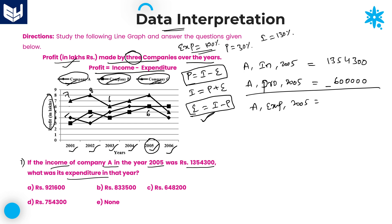Expenditure is equal to income minus profit. Just subtract the profit value from the total income value: 13,54,300 minus 6,00,000. Two zeros common, 3 minus 0 is 3, then 4, then 5; and 13 minus 6 is 7. So the required answer is 7,54,300. That is the required expenditure of company A in the year 2005 — 7,54,300. That is option D, the right answer for this question.